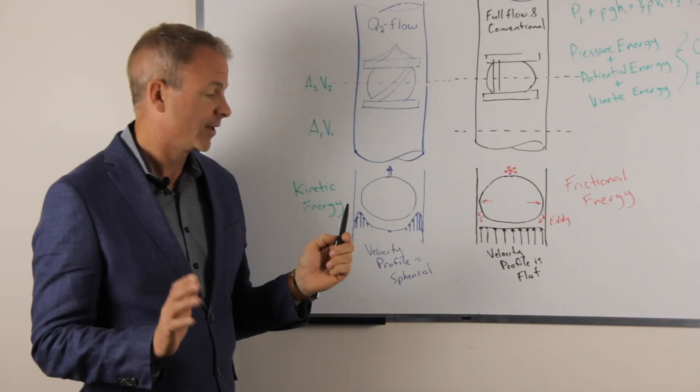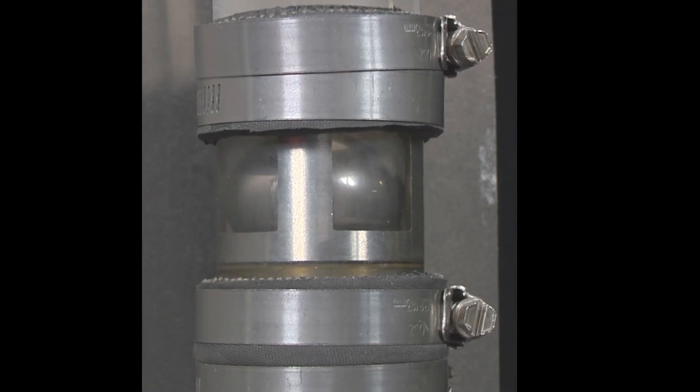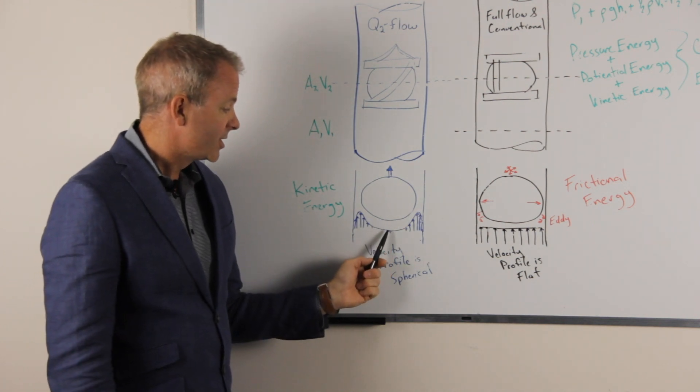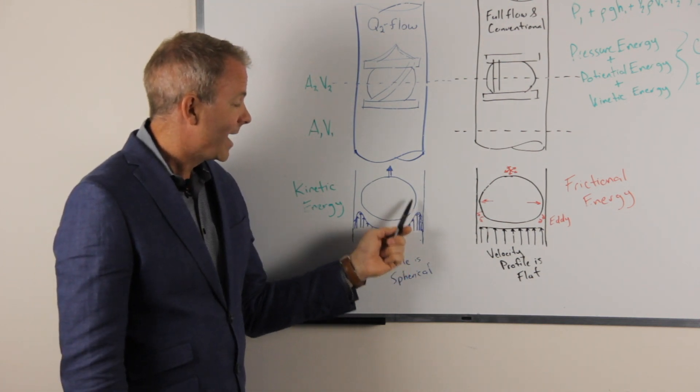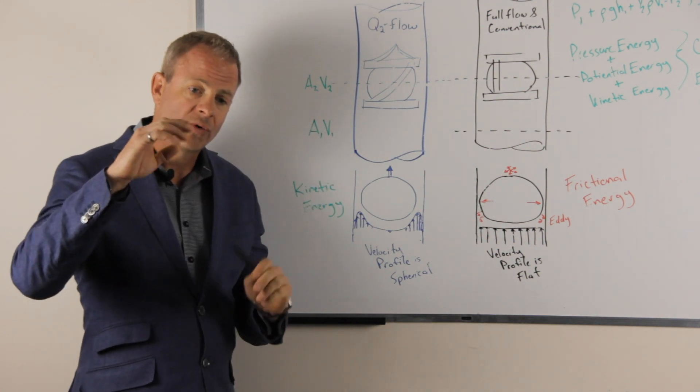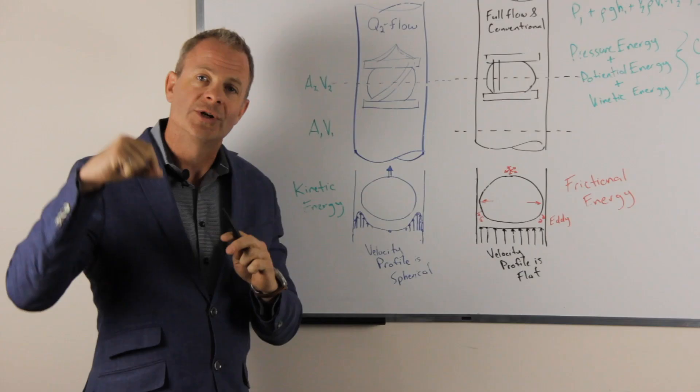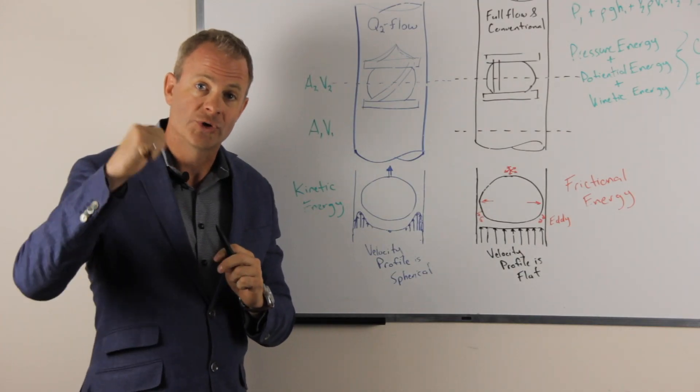That does a number of things. One, it stops the ball from vibrating back and forth and causing frictional energy in your pump. Two, you can see the velocity profile is maximum in that cross-sectional area here. Every time you pump your stroke, you get more kinetic energy in the smallest area of your pump, which increases your velocity every time you pump your stroke.